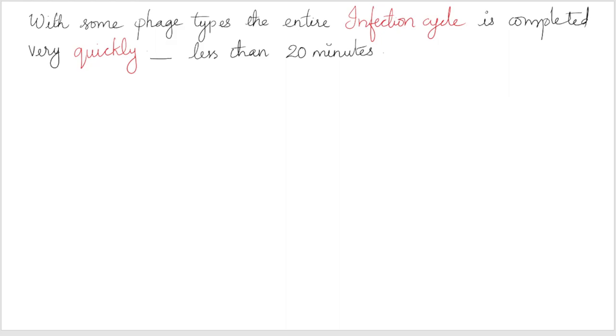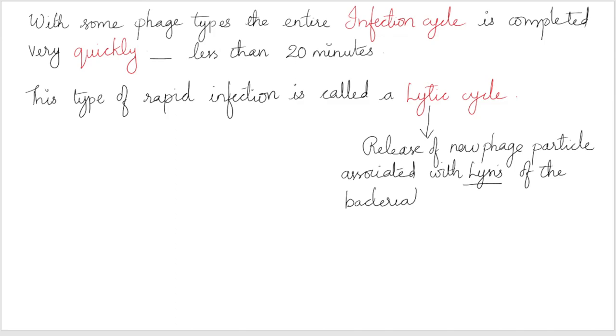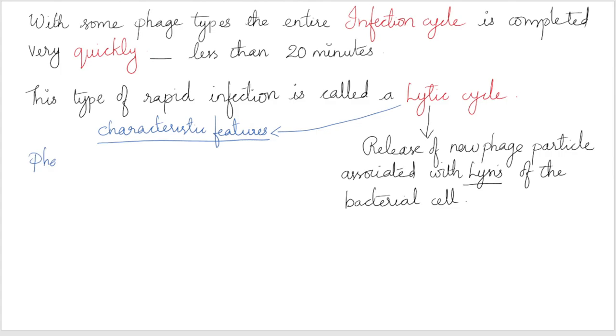With some phage types, the entire infection cycle is completed very quickly, possibly in less than 20 minutes. This type of rapid infection is called a lytic cycle, as release of the new phage particles is associated with lysis of the bacterial cell. The characteristic feature of a lytic infection cycle is that phage DNA replication is immediately followed by the synthesis of capsid proteins, and the phage DNA molecule is never maintained in a stable condition in the host cell.